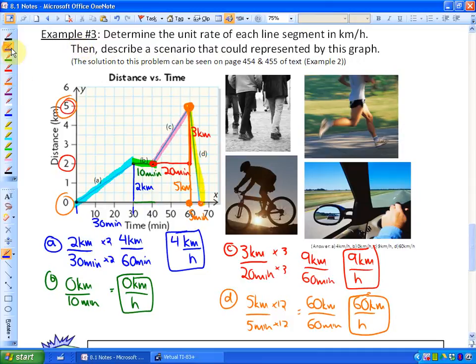So the scenario could be: four kilometers per hour is approximately a walk, zero kilometers per hour is a stop, nine kilometers per hour could be a jog, and 60 kilometers per hour is a drive. So this scenario could describe someone who walked, then stopped, then jogged, then drove home.